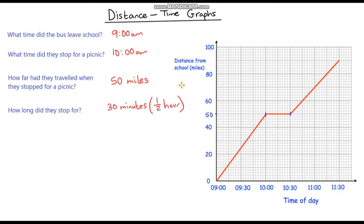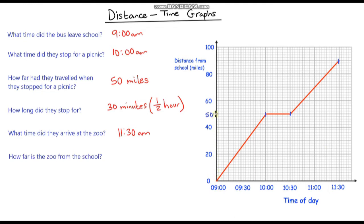The next question is: what time did they arrive at the zoo? They set off again after their picnic and continue on their journey until they get to this point here, which if we go down is 11:30. And the final question is: how far is the zoo from the school? If we go along until we get to the line, it's halfway between 80 and 90, which is 90 miles. So it is 90 miles from the school to the zoo.